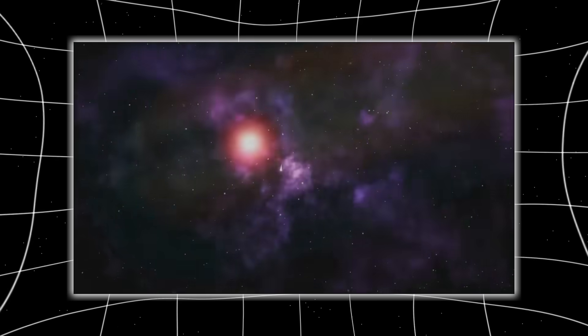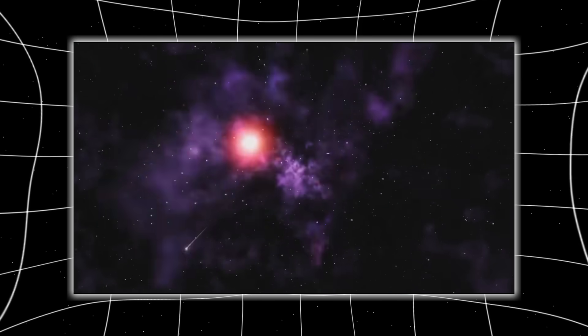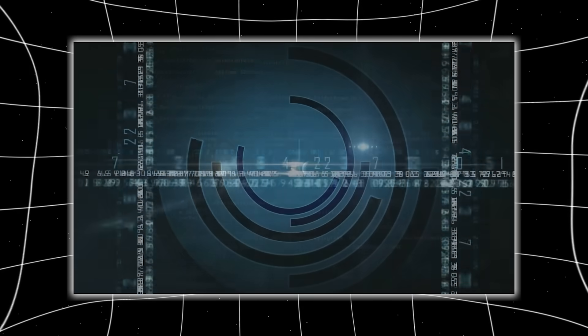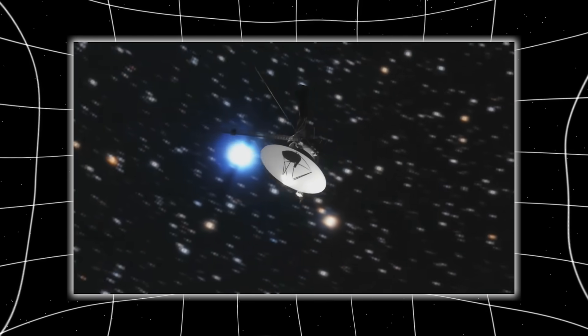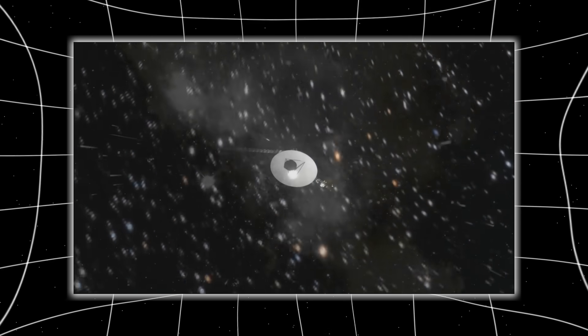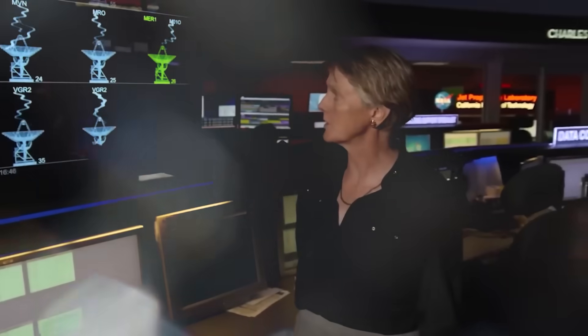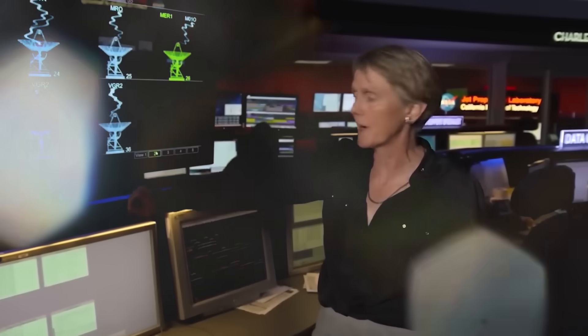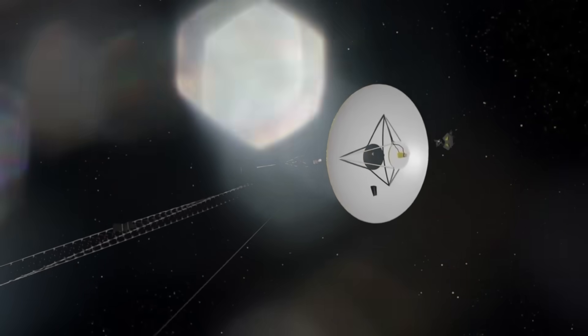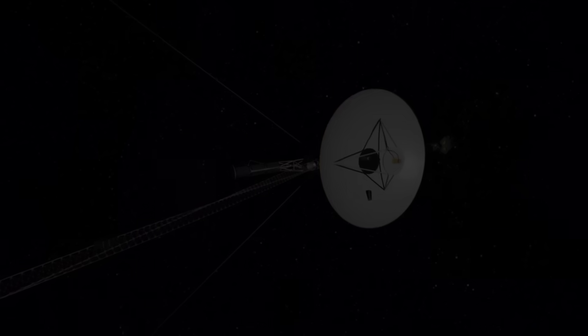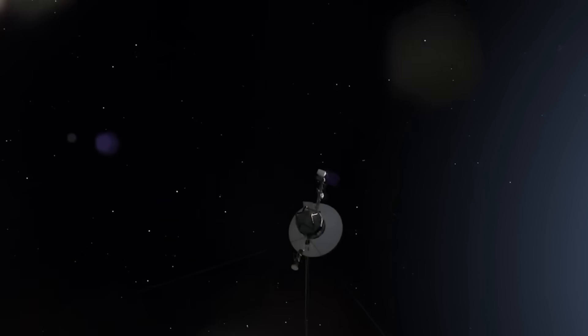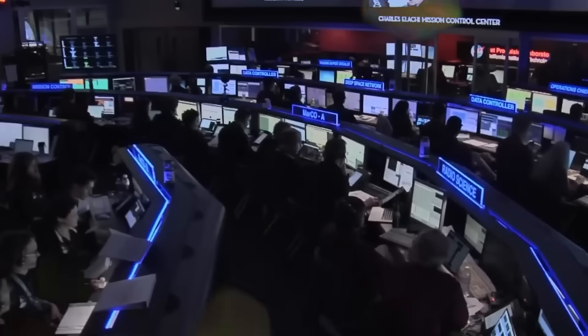The engineering marvels of the 1970s, these probes were built with less computing power than a digital wristwatch, yet designed with such foresight that they're still functioning today. After breathtaking encounters with Jupiter and Saturn, Voyager 1 turned northward, out of the ecliptic, out of the plane of the solar system, and toward the stars. Its planetary mission was over, but its legacy was only beginning.